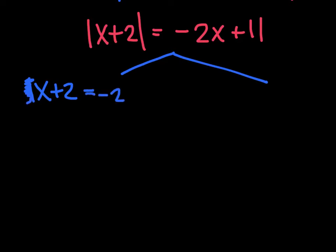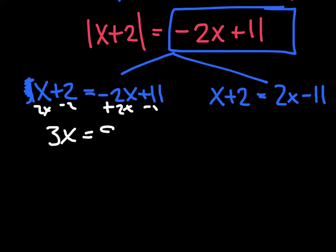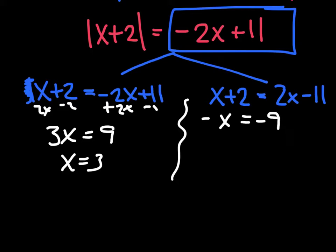The second equation: leave the left side, negate the whole right side — everybody changes signs — so x plus 2 equals 2x minus 11. Now we simply solve each. For the first: add 2x, subtract 2, I get 3x equals 9, so x equals 3. For the second: subtract 2x to get negative x, subtract 2 equals negative 9, divide by negative, so x equals 9.